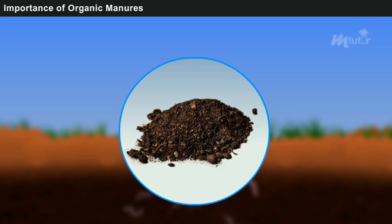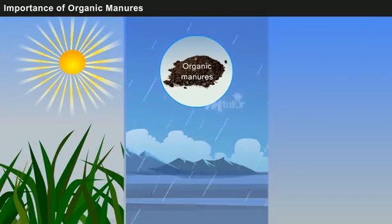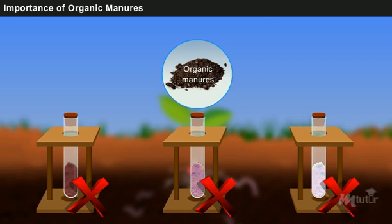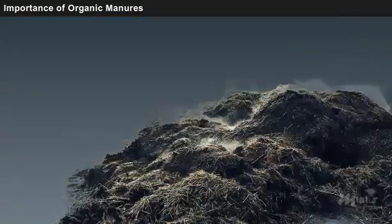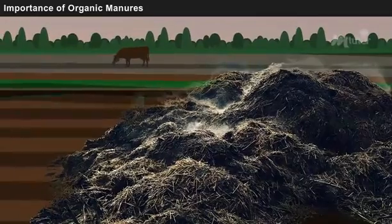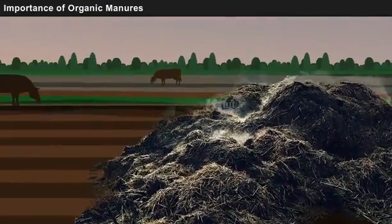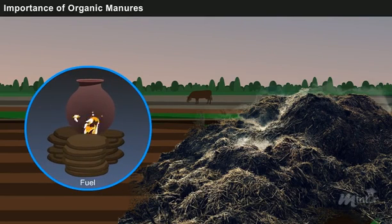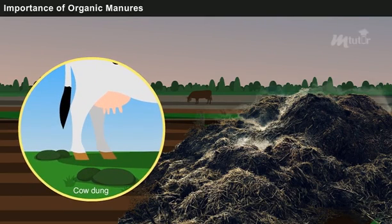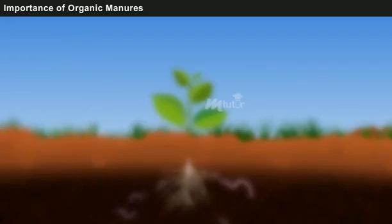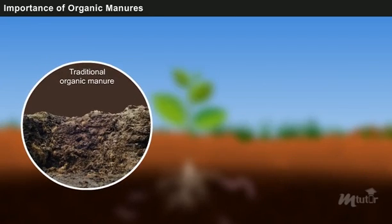Importance of organic manures: Organic manures are easily available in all climatic conditions. Organic manures do not need any additional components to react with the soil. Animal manure, which is one of the types of organic manures, can also be prepared from slurry that is easily available in agricultural lands. They can also be used as a fuel — an example is cow dung.